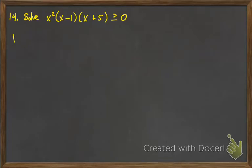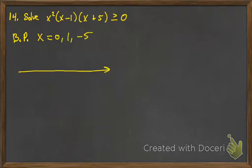These last two examples are going to be for pre-calc inequalities. We're going to solve the inequality x squared times x minus 1 times x plus 5, greater than or equal to 0. The first thing to do is to factor and make sure the inequality is set equal to 0, which it already is. So we're going to find the boundary points. x squared gives us x equals 0, x minus 1 gives us 1, and x plus 5 gives us negative 5. Those are the boundary points, also the x-intercepts, where the polynomial may change signs.